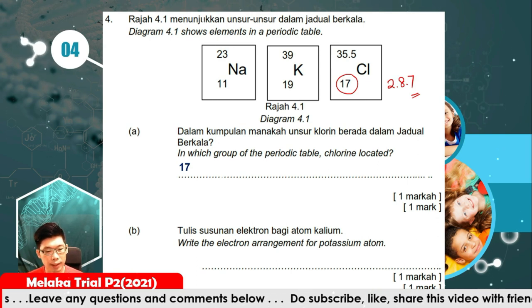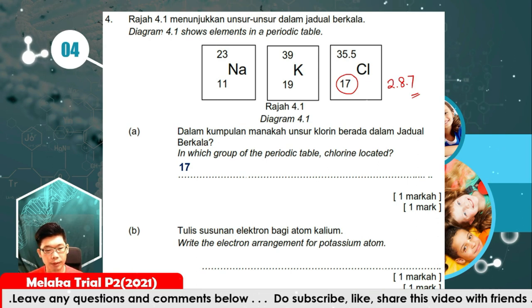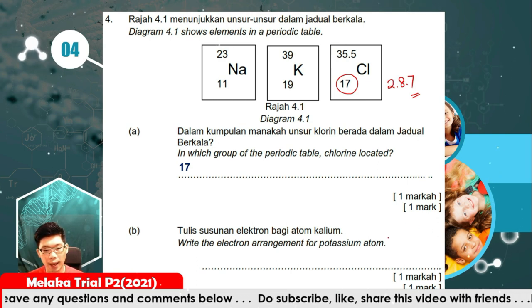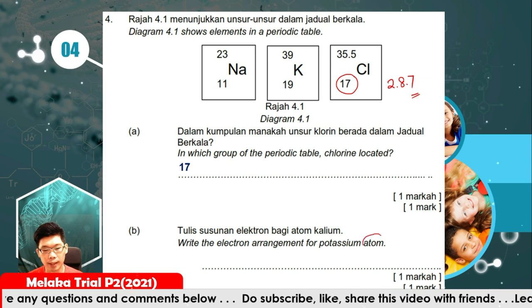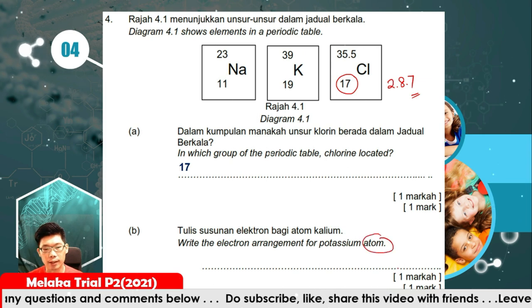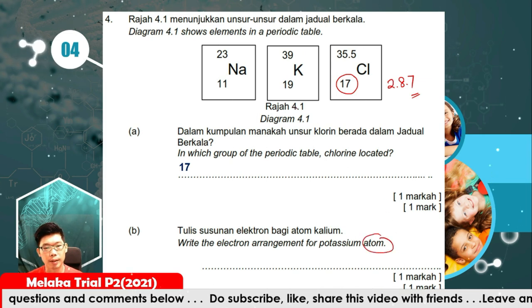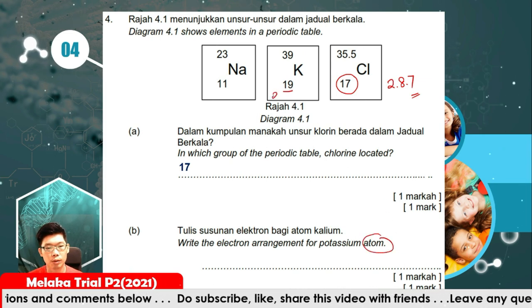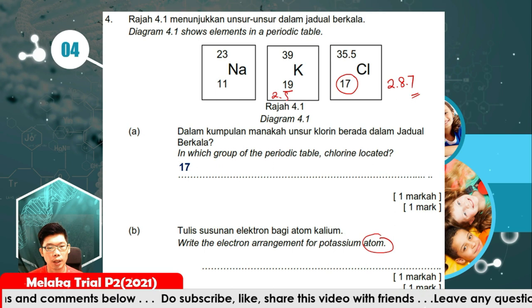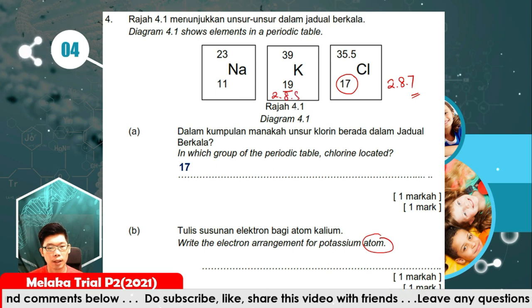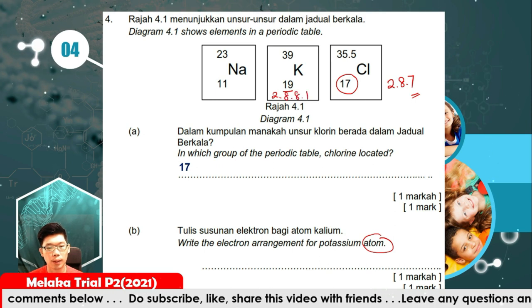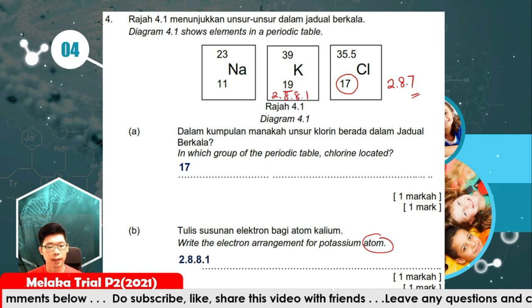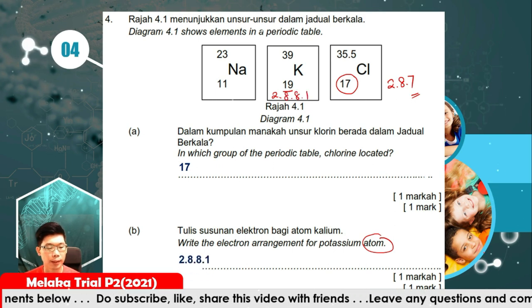Write the electron arrangement for the potassium atom — not the ion. Potassium has 19 protons, so its electron arrangement is 2, 8, 8, 1.